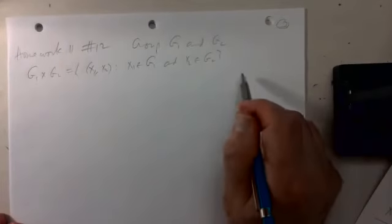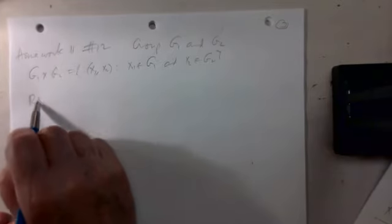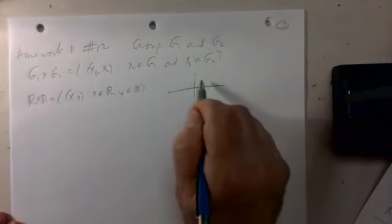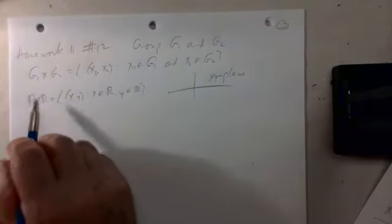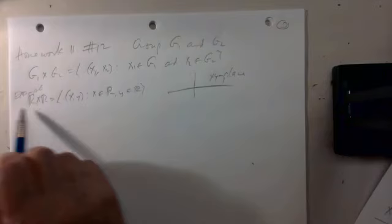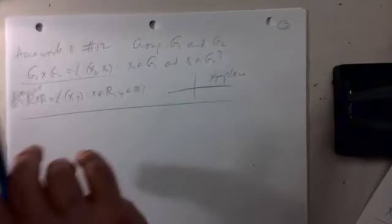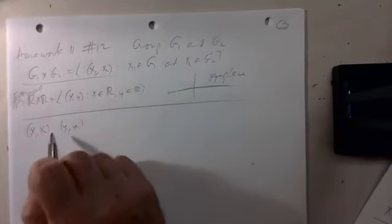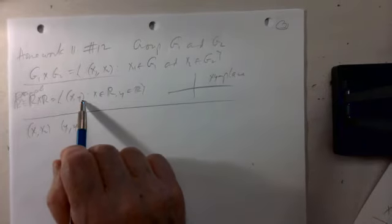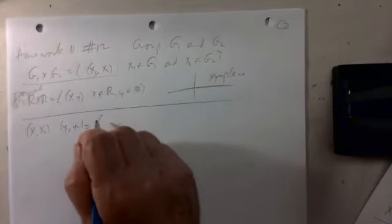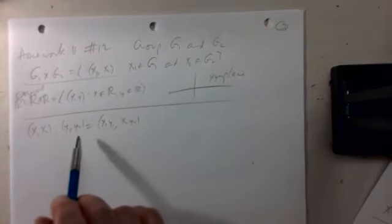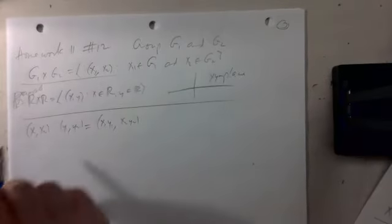As a simple example, ℝ × ℝ is all pairs (x, y) with x, y in ℝ — that's just the ordinary xy plane with vector addition. We define multiplication coordinatewise: (x₁, x₂)(y₁, y₂) = (x₁y₁, x₂y₂). This is a binary operation, and part (a) asks you to check it's a group.